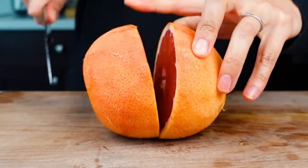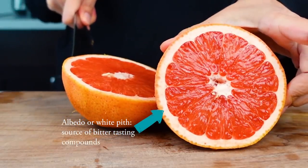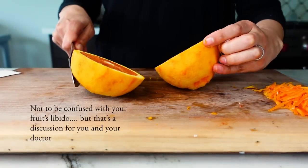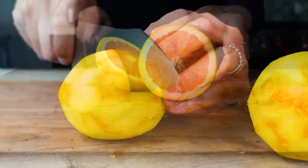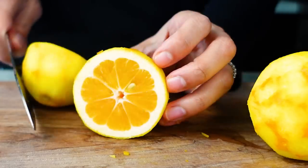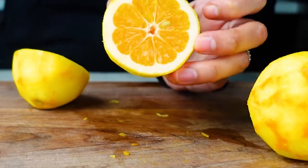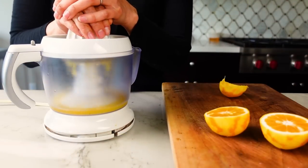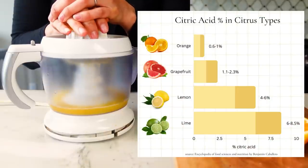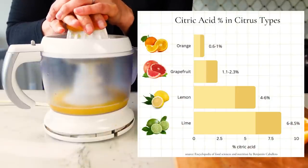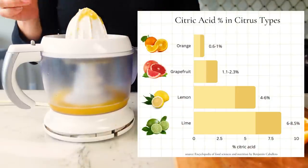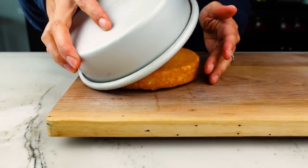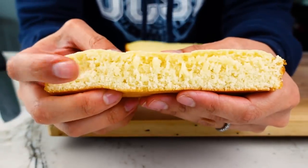Water-soluble bitter compounds are located beneath in the pith, or albedo, so we want to avoid that if we can. Both the flovito and albedo comprise the outer peel, and that encases the second component which is the juice in the citrus segments. This juice contains far less flavor but, more importantly, citric acid — that's the sour or tart taste we associate with citrus. The amount of citric acid or tartness will vary depending on the fruit. Ultimately I wanted my citrus loaves to have a bit of tartness, but I was a little worried about the acidity in my cake batter.